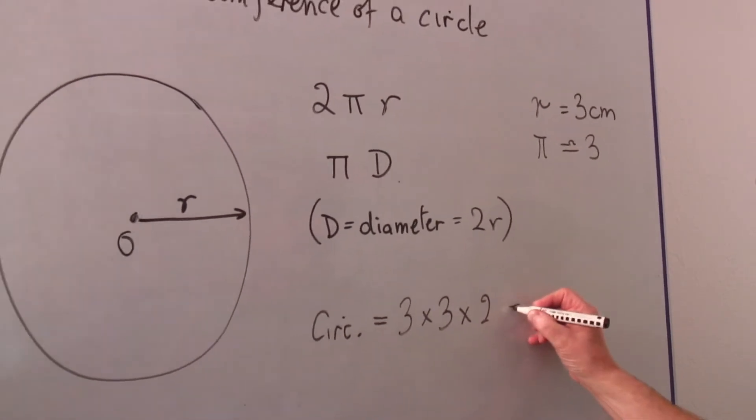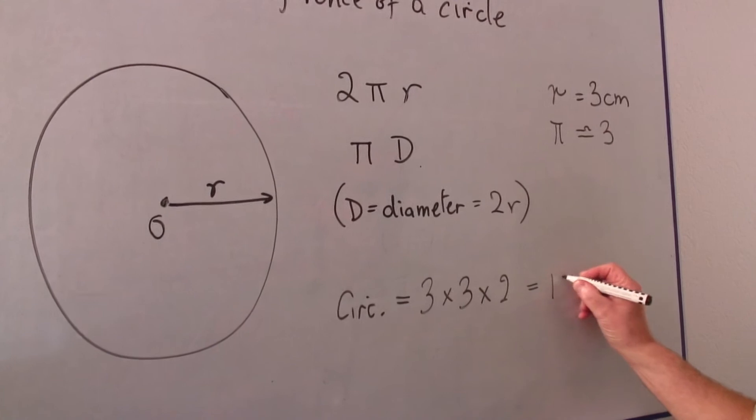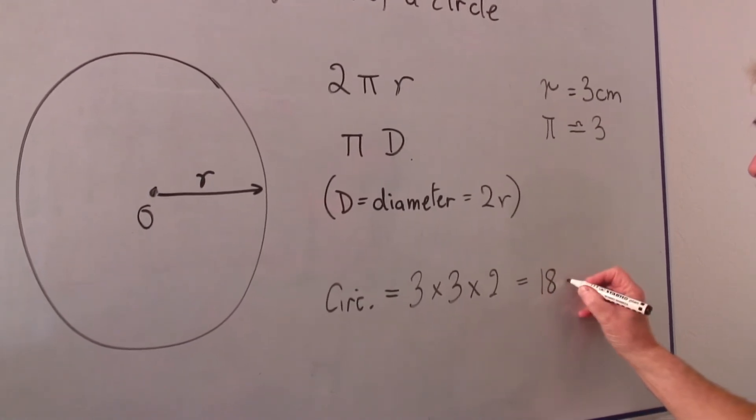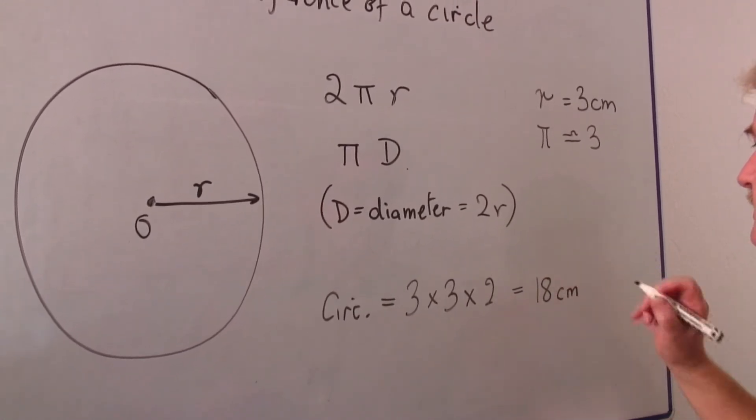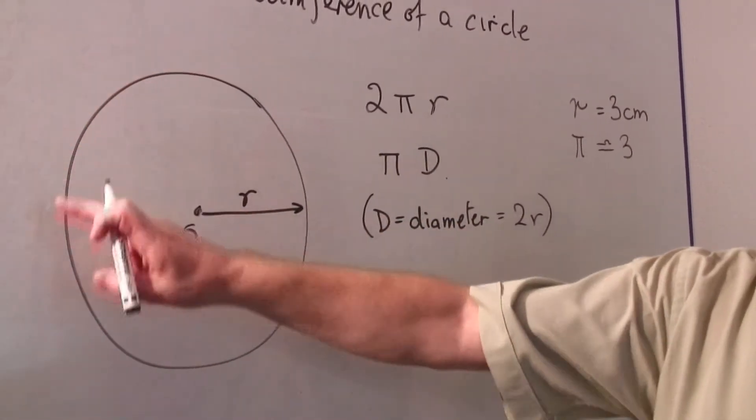And that gives us three times three is nine, times two is eighteen. And of course it is centimetres. This is a distance around the outside of the circle.